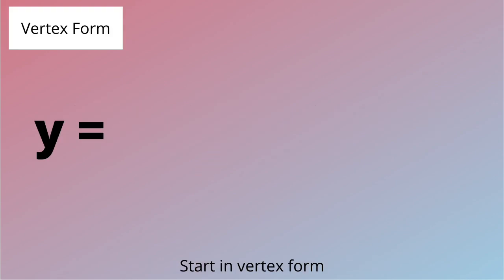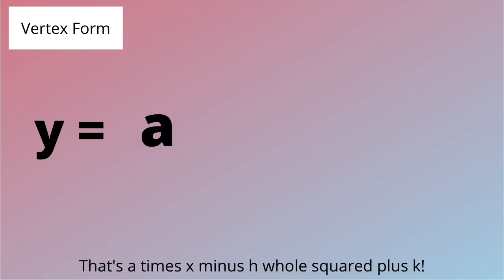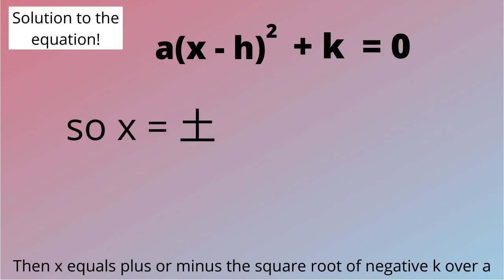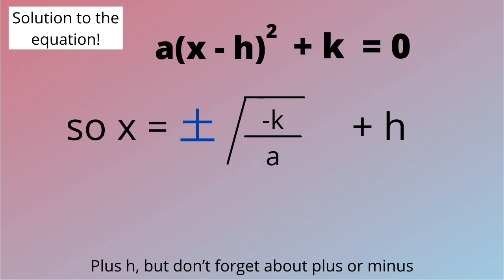Start in vertex form. That's a times x minus h whole squared plus k. Then x equals plus or minus the square root of negative k over a plus h. But don't forget about plus or minus. That gives you two different roots.